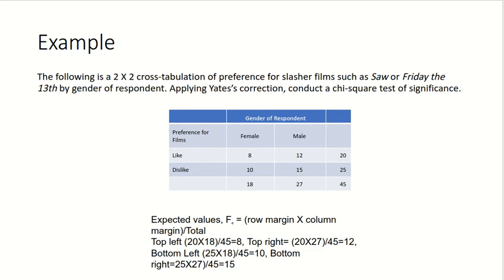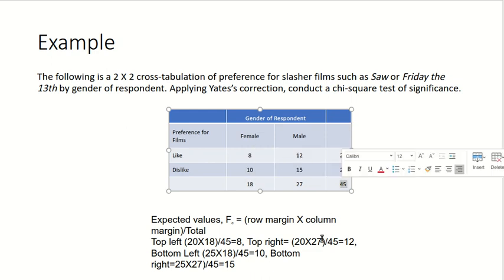Let's look at an example. This is a 2x2 table of preferences for slasher films, comparing the films Saw and Friday the 13th by gender to see if there are any differences between males and females for preference for the films. We're going to use the chi-square test to do that. The expected values for each cell are calculated by multiplying the row total by the column total, then dividing by the overall total sample size.